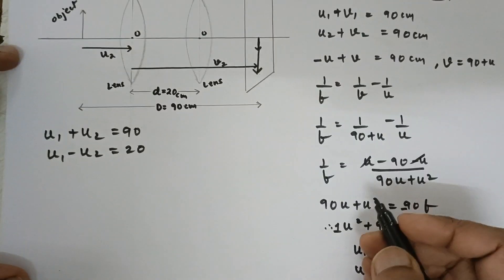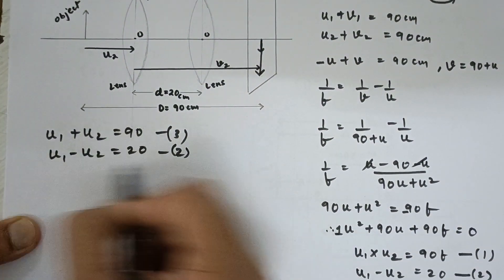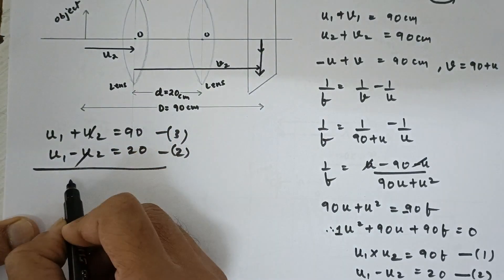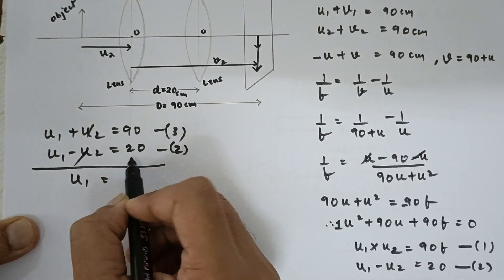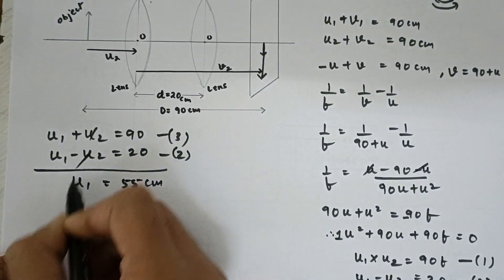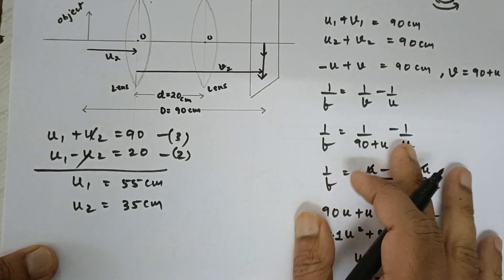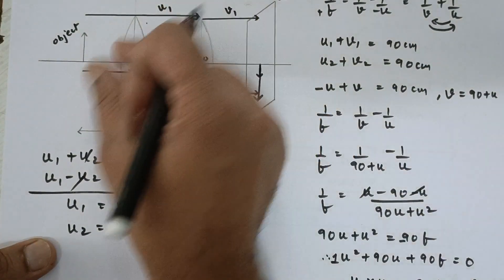So, taking these two equations and solving, this is 3 and this is 2. So, simply adding these two equations these two getting cancelled. So, u1 turns out to be 90 plus 20, 110. So, u1 would be 55 centimeter and plugging the value u2 would be 35 centimeter. So, we have obtained both the object distances.